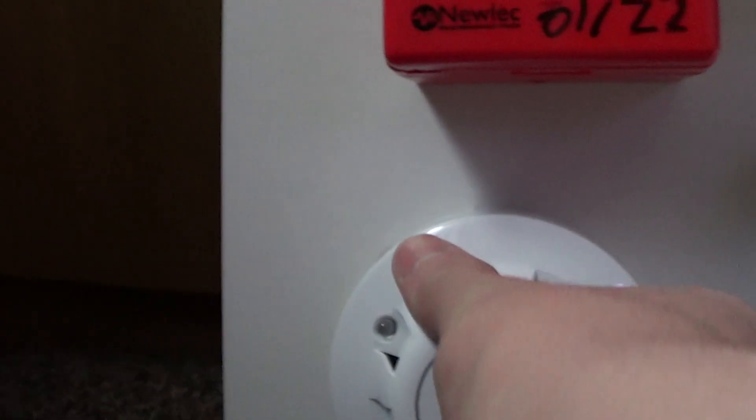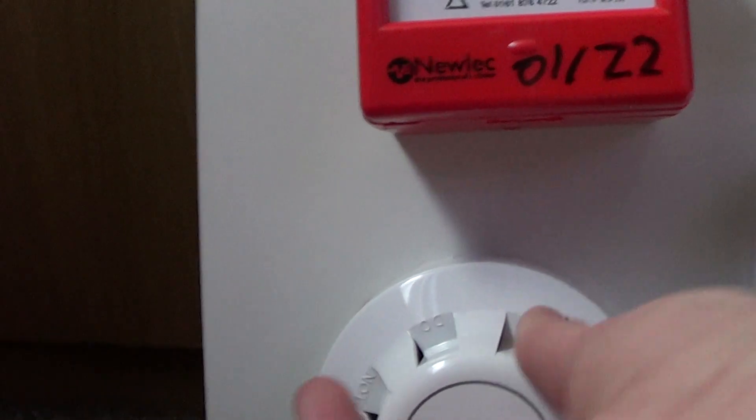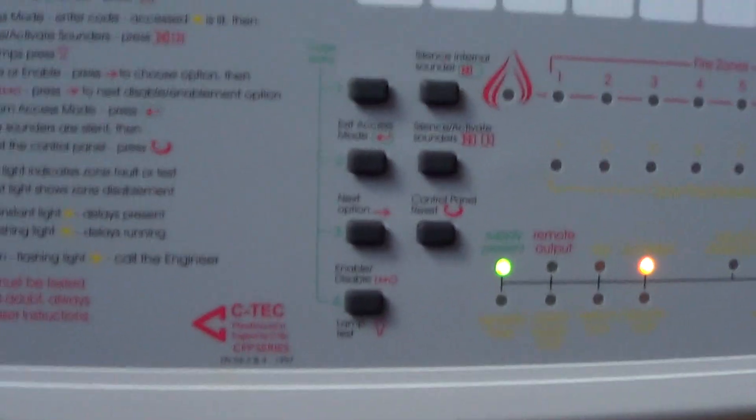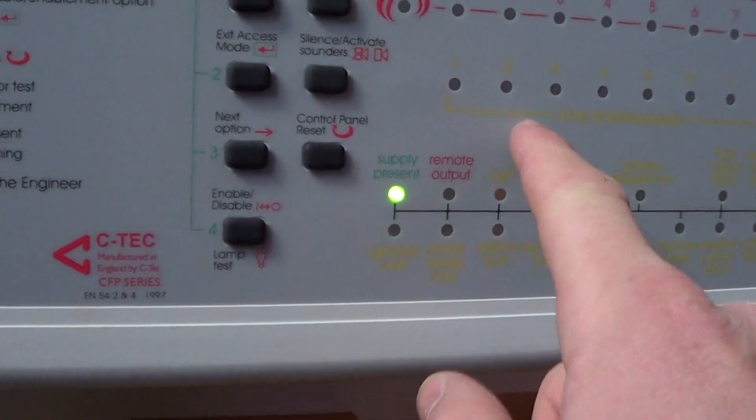Now put this back on its base. I have to be careful with this detector because I've taken it apart. I'll now reset that. Now that's back on, the fault should clear on zone two. You see it's cleared.